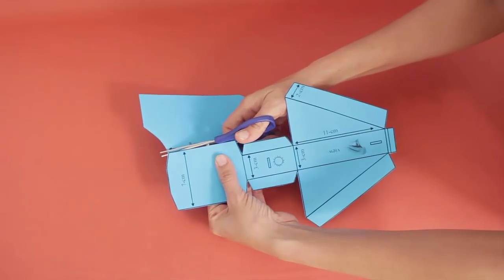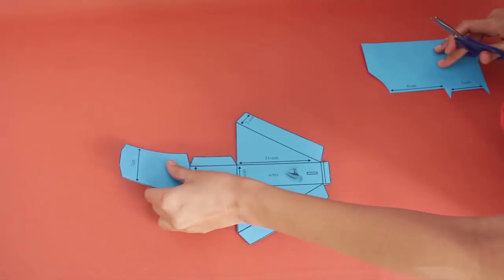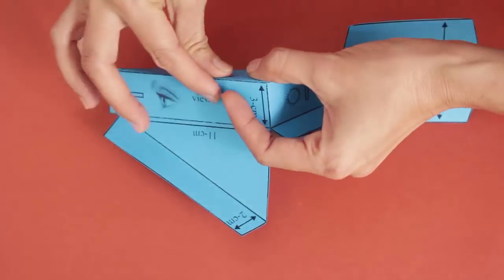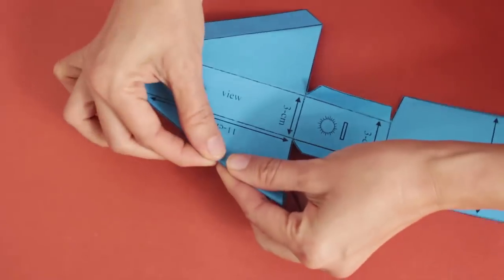Once you finish cutting, you will get an arrow shape. Now fold along all the dotted lines. This will help in assembling the model.